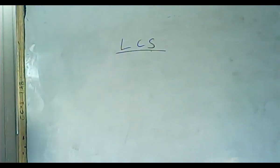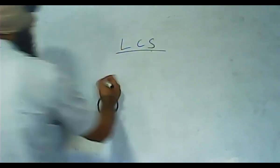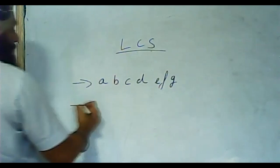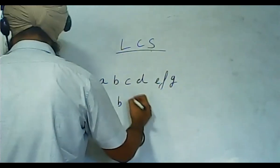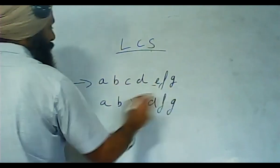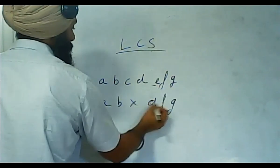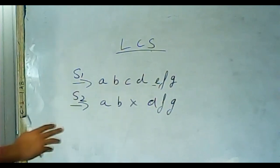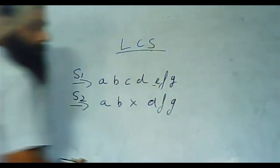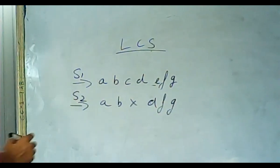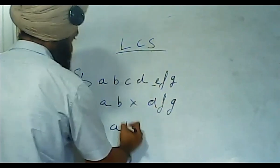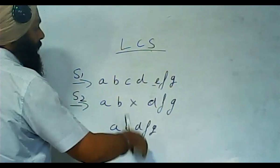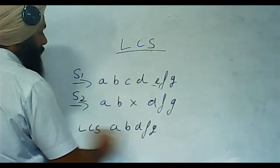What is the longest common subsequence in these two sequences? Sequence one: A, B, C, D, E, F, G. Sequence two: A, B, X, D, F, G. Here we have E but not there; here we have C and D, there only D. The longest common subsequence is A, B, D, F, G. There is no common sequence greater than this. A matches A, B matches B, C and X do not match, D matches D, F matches F, G matches G. This is the longest common subsequence.